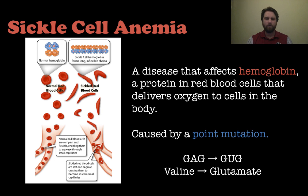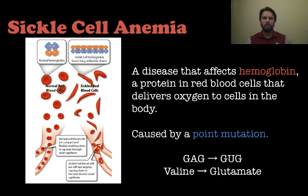Sickle cell anemia is the first example — a disease that affects hemoglobin, the protein in your red blood cells that helps deliver oxygen to your body. With a point mutation in the protein coding for hemoglobin, the red blood cells change shape to a sickle shape. It's an inflexible chain that occludes your blood vessels. Specifically, a codon that should be GAG is changed to GUG — that A is changed to a U — so instead of getting glutamate in your polypeptide chain, you get valine, and that small change causes sickle cell anemia.